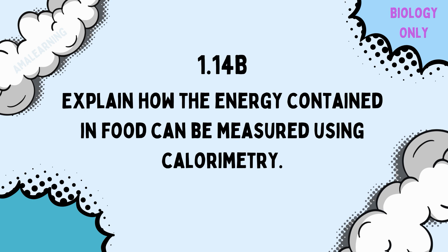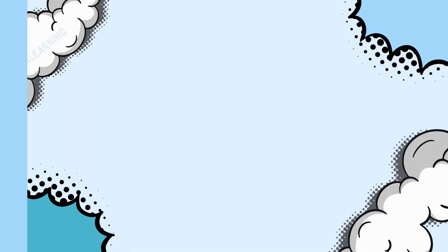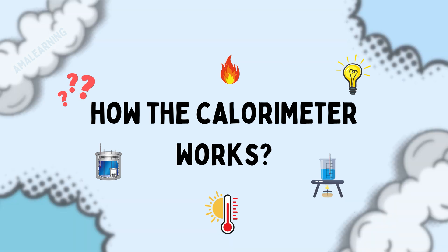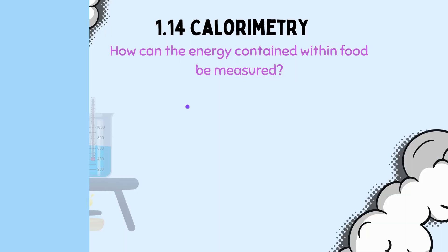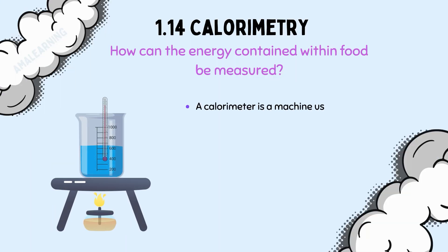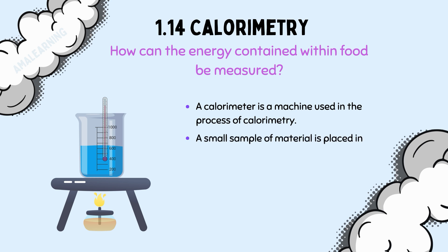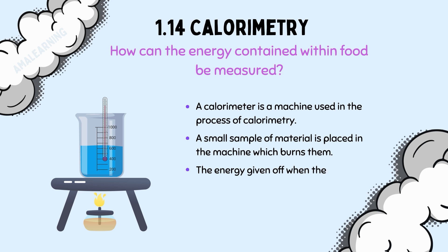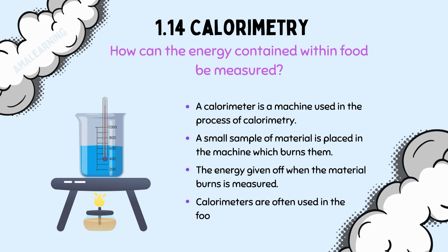To successfully answer any GCSE question linked to this specification point, you will need to know how the calorimeter works. A calorimeter is a machine used in the process of calorimetry. A small sample of material is placed in the machine which burns it. The energy given off when the material burns is measured. Calorimeters are often used in the food industry to measure the energy in food.